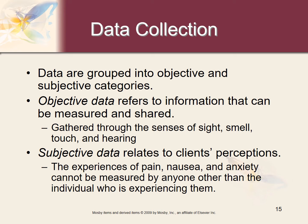Data is grouped into objective and subjective categories. Objective data refers to information that can be measured and shared — it's gathered through the senses of sight, smell, touch, and hearing. Subjective data relates to the client's perception; experiences of pain, nausea, and anxiety cannot be measured by anyone other than the individual experiencing them. You want to document information descriptively and accurately, do not include judgments in your documentation, and quote as much as possible.